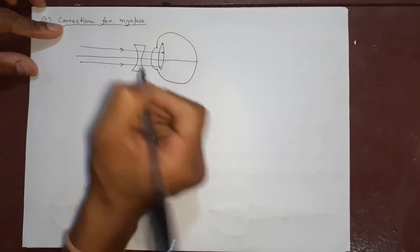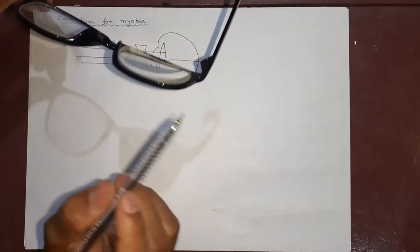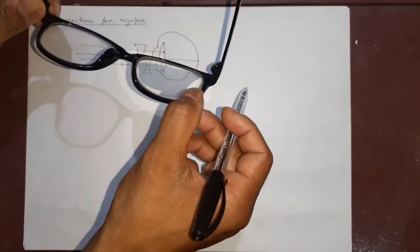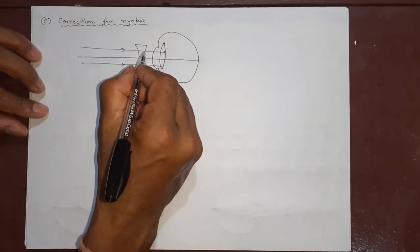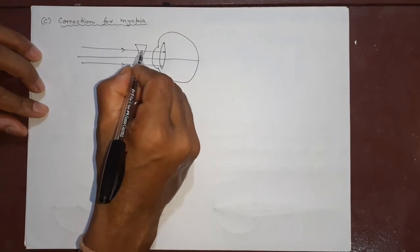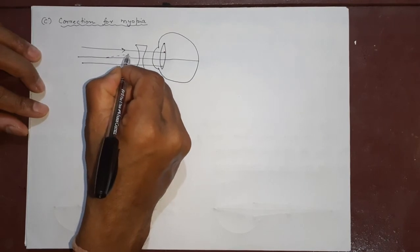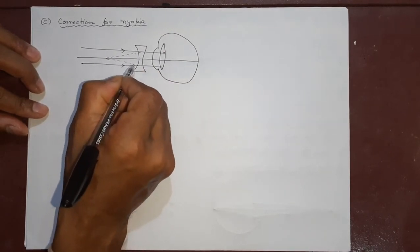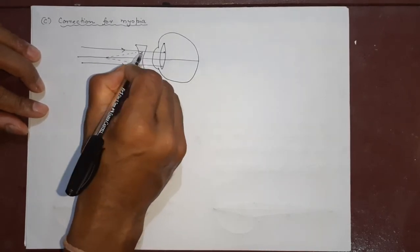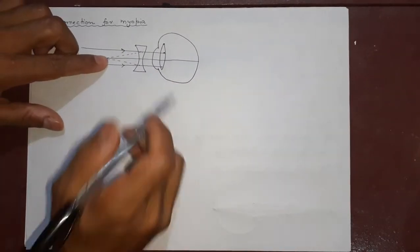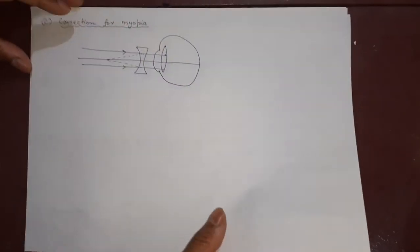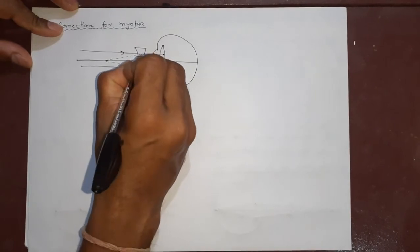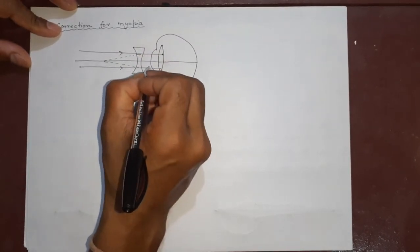The concave lens is thick at the edges and thin at the middle. This lens is added in front of the eye. What it will do is make the light appear as if it is coming from the far point of the myopic eye — not from infinity. So the eye lens will now think that the light is coming from a nearer point, just like in diagram one, and it will be ready to make the image on the retina.